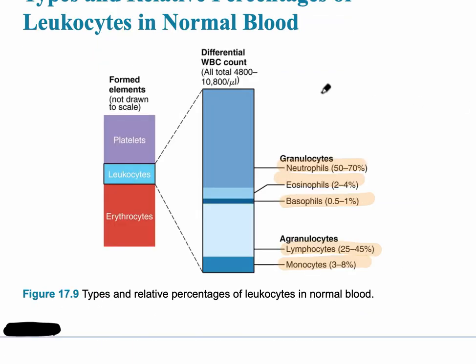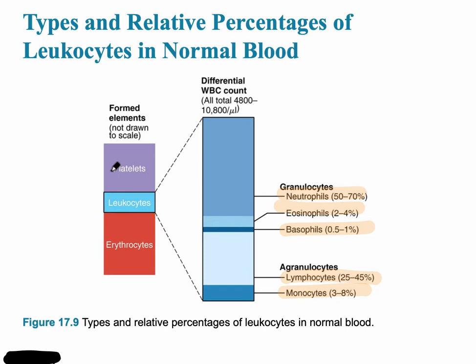A differential white blood cell count is a common test in medicine to figure out what's wrong with a patient. For example, if there's an increase in eosinophils, it's likely that the patient is having an allergic or asthmatic reaction to something. You should know the general percentages listed on the slide.